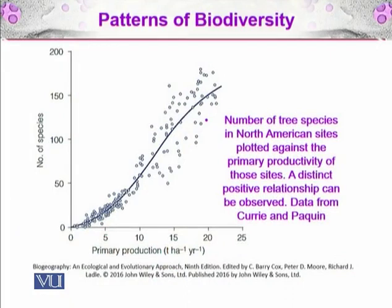A distinct positive relationship can be observed, using data from Currie and Paquin. The number of species is on the y-axis and primary production on the x-axis. As primary production increases, the number of species in that area increases, meaning that an increase in primary production increases the biodiversity of that area.